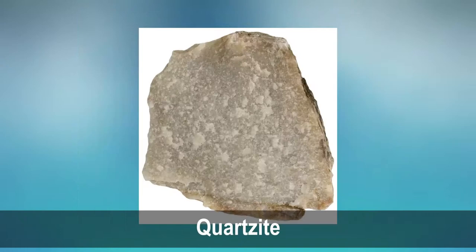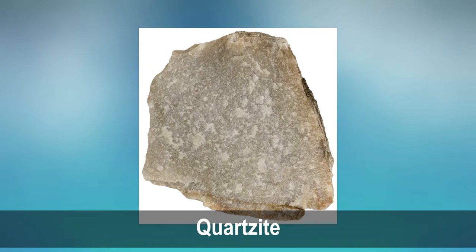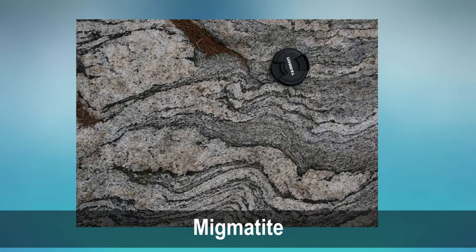Quartzite: a monomineralic rock composed predominantly of quartz and shows granoblastic texture. Impurities in the original protolith sandstone may form aluminous or ferromagnesian minerals. Migmatites: a megascopically composite rock made up of biotite-rich dark bands and quartz-feldspar-rich light bands, which appear to have formed either by metamorphic differentiation or by partial melting in high-grade metamorphism. Several types of migmatites are distinguished depending on the mutual relationship and geometric shape of the dark and light bands.